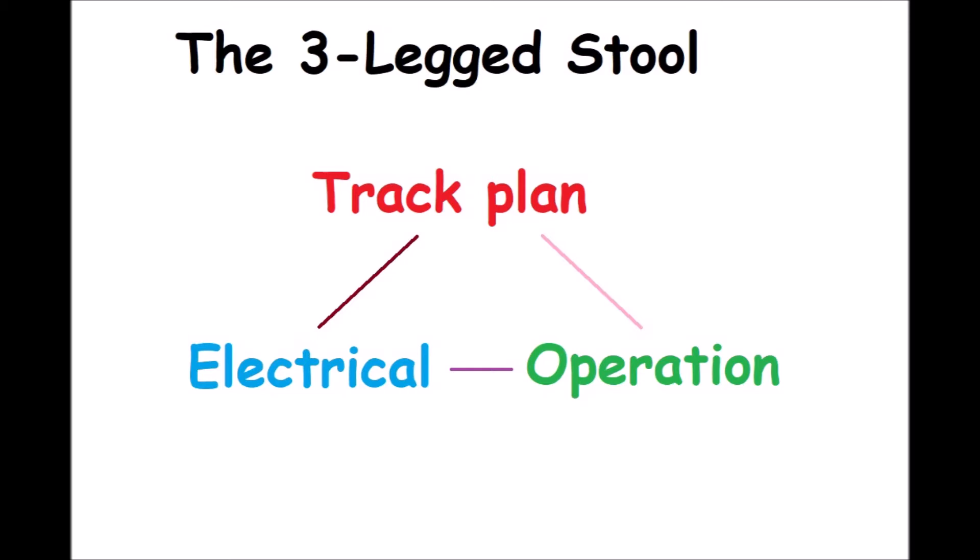Welcome to this, the final video in the series of Designing a Model Railway. This one is entitled The Three-Legged Stool, talking about track plans, the electrical design and the operational design, and how those three elements fit together.